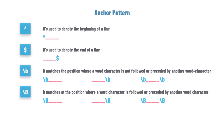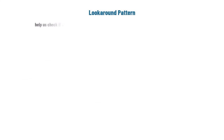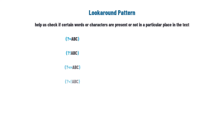Let's now move on to look-around patterns. Look-around patterns help us check if certain words or characters are present or not in a particular place in the text. What's interesting is that after this check, the position in the text doesn't change — it's like peeking ahead or behind without moving. There are four types: positive look-ahead, negative look-ahead, positive look-behind, and negative look-behind.